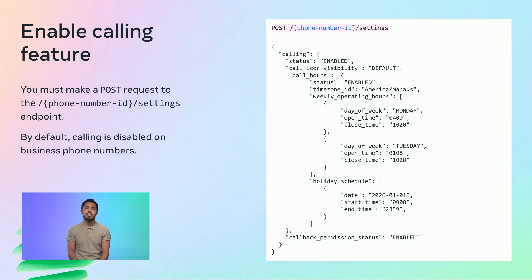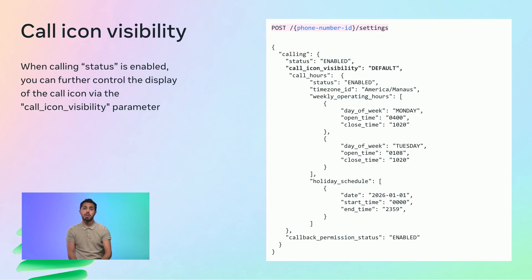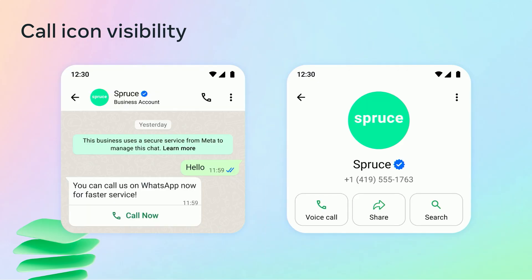The calling object has several parameters. The first is the status parameter. When set to enabled, the WhatsApp client will render the call icon in the business conversation and business chat profile. The second parameter is call_icon_visibility. Once the calling status is set to enabled, you can further control the display of the call icon through this parameter. When set to default, the call icon will be displayed in both the chat menu and in the business information screen.